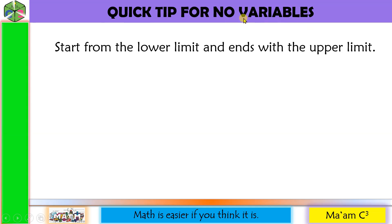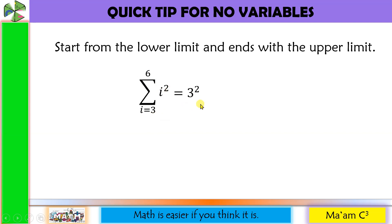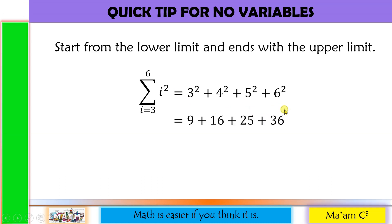For no variable written: start from the lower limit and end with the upper limit. For example, if there is no variable written, just start with the lower limit indicated and end with the upper limit. Our starting value is 3, so we have 3 squared, then 4 squared, then 5 squared, then 6 squared. 9 plus 16 is 25, 25 plus 25 is 50, and 50 plus 36 is 86.